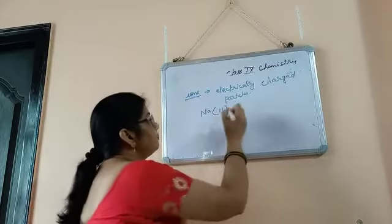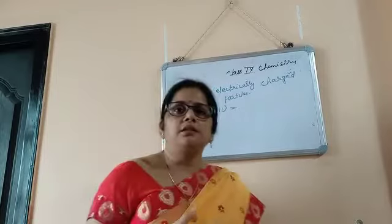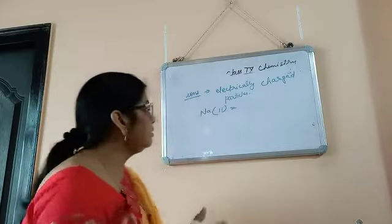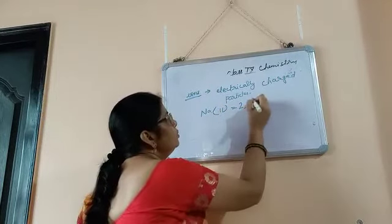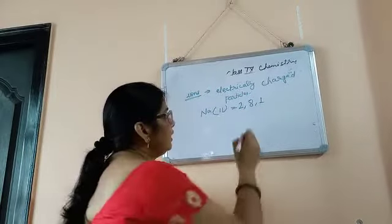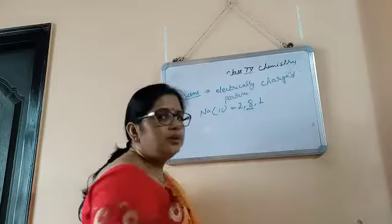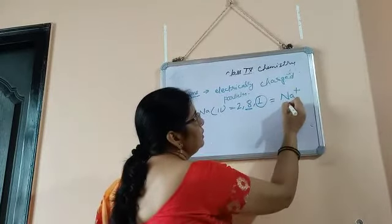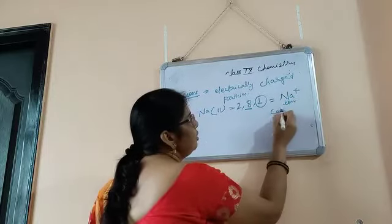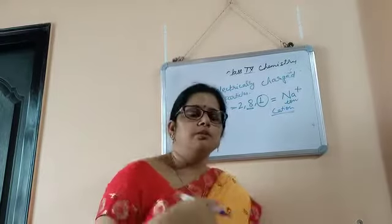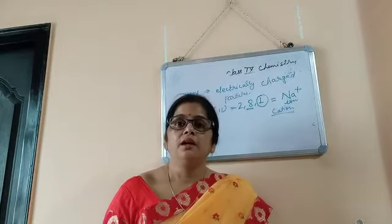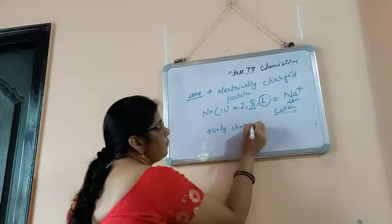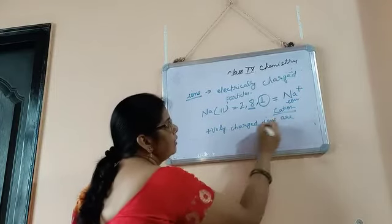To get a stable condition, metals, non-metals, or any element gives electrons or takes electrons. For example, sodium has configuration 2, 8, 1 — to get stable, it gives away one electron to form sodium plus ion. Sodium plus ion is called a cation — positively charged ions are called cations.